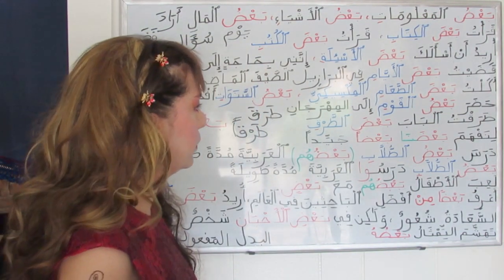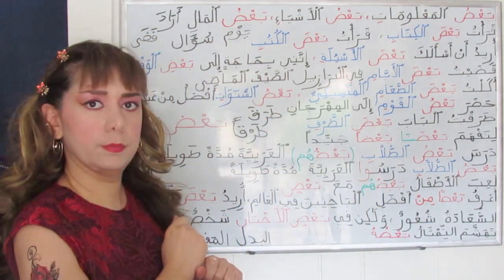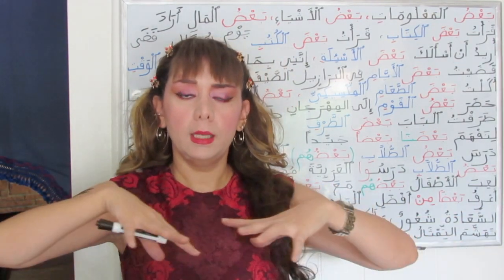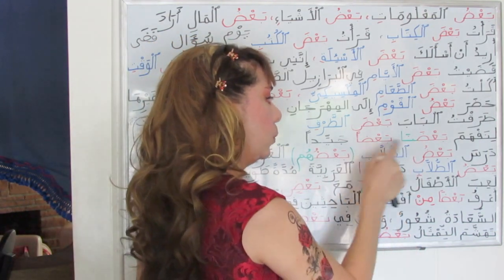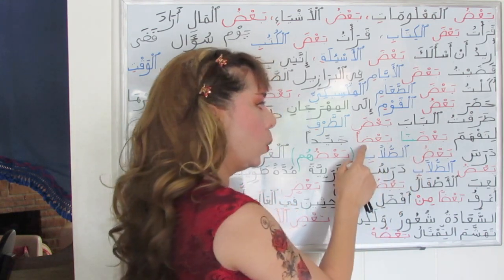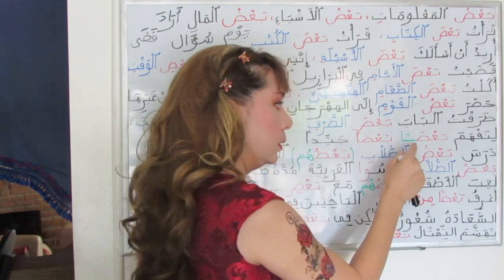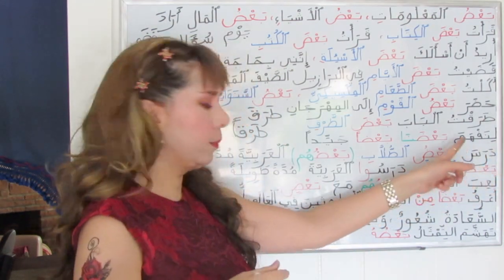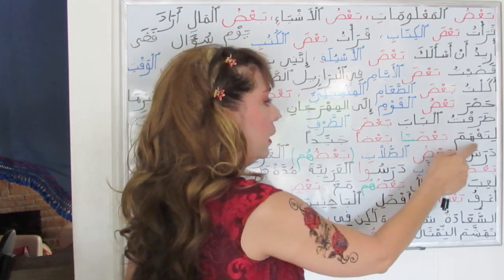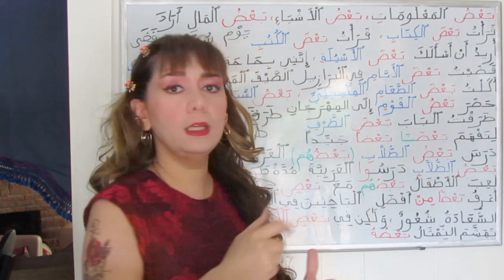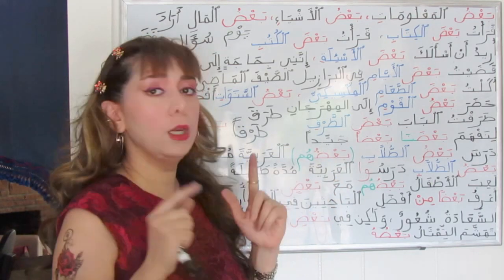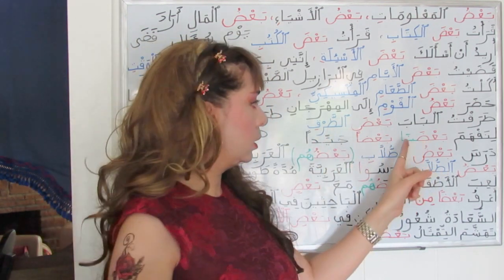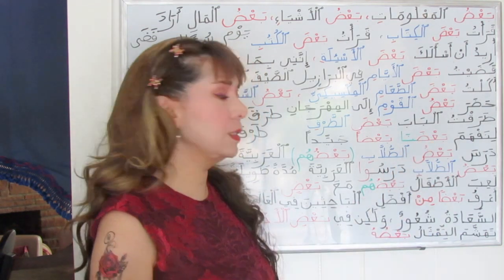When you have two consecutive ba'd, and the second one has a returning pronoun referring to the first, it means 'each other.' For example, litafahama ba'dunا ba'dan — let's understand each other well. The second ba'd is nunated and the pronoun of the first refers back to the subject.